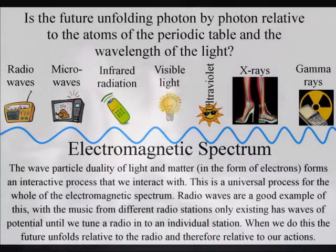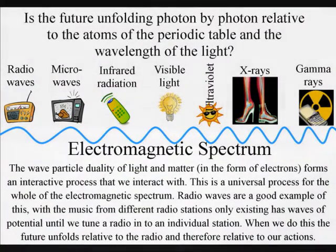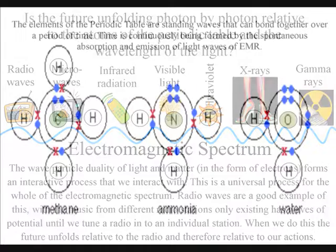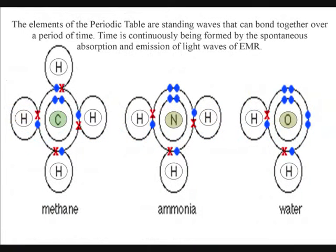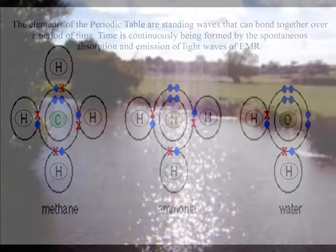This universal process is unfolding relative to the atoms of the periodic table and forms the ever-changing world of our everyday life that we measure as a period of time. The atoms of the periodic table are forming standing waves in time with the spontaneous absorption and emission of photon energy forming the passage of time.